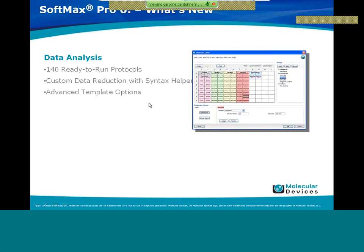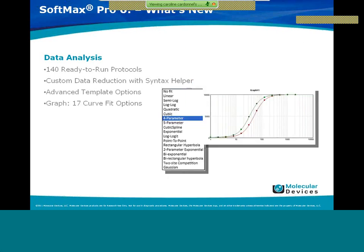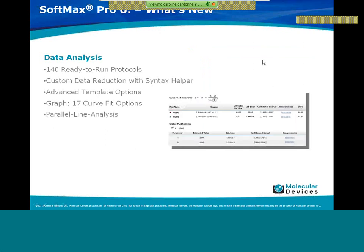The syntax helper makes writing formulas in SoftMax Pro 6 very easy — you just select the syntax helper in the formula window and SoftMax Pro guides you through formula writing. There are advanced template options with 17 different options to choose from. The graph now provides much more information, including the EC50 calculated and reported automatically below the graph if parallel line analysis is selected. Data security has been improved with a data recovery system and an auto-save linked to each protocol.